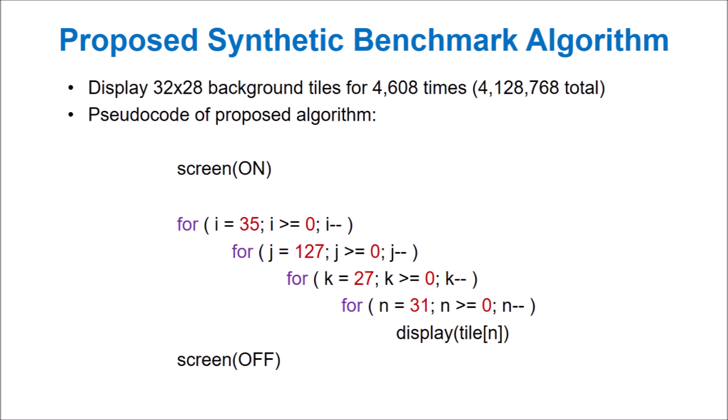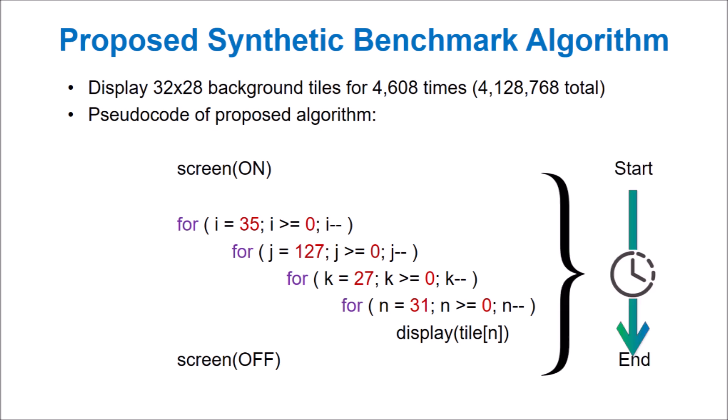We'll first turn the screen on, then use a quadruple nested for loop that will draw a single tile during each iteration. Once complete, the screen will turn off. By calculating the time between the first tiles drawn and the screen turning off, we can determine the speed of operation.